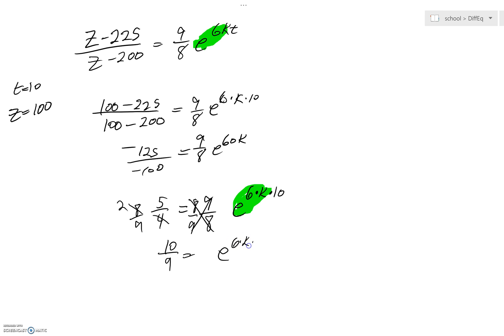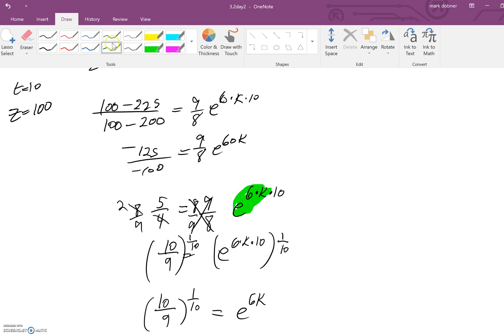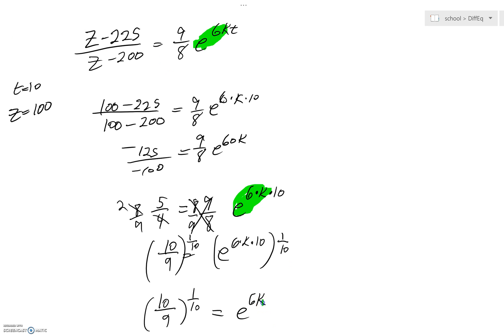But honestly, what we want to do right now is just get rid of that 10 up as a power. Raise both sides to the 1 tenth power. And wonderfully and quickly, you're going to be able to know what e to the 6k is equal to. Now, again, feel free to take an ln and then divide by 6 if you'd like. But here's something that we've done a lot of times, even in B.C. Cal.